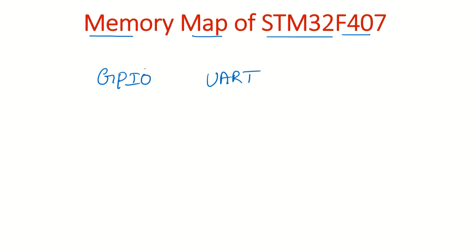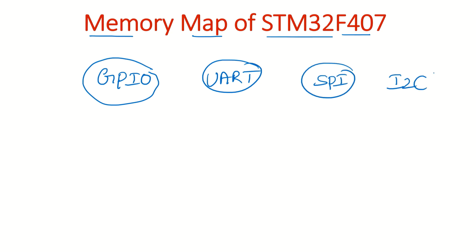All the peripherals — GPIO, UART, SPI, and I2C — are connected to the system bus. Whenever you want to access or communicate with any peripheral, you have to do so through the system bus only. That's why, before writing the addresses of a peripheral, first you should know what is the address range of each system bus.